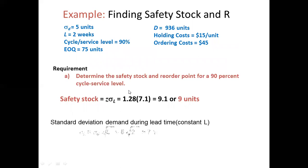The safety stock formula is Z × Sigma_D × √L. Here, Z × Sigma_D = 1.28 × 5 = 6.4. With a lead time of 2 weeks, √2 ≈ 1.41, giving safety stock ≈ 9 units (rounded to 9 units).